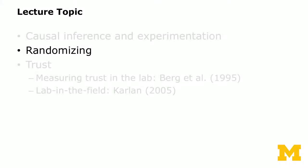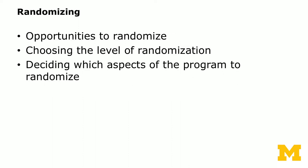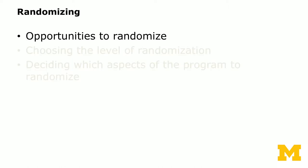Now we're going to go through the in-field constraints and the type of randomization you can implement in the field and in the lab as well. You will have many opportunities to randomize and you get to choose the level of randomization. Different levels of randomization imply different statistical power and analysis methods, and you have to choose which aspect of the program to randomize. Let's first talk about the opportunities to randomize.